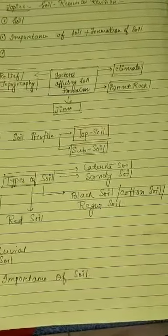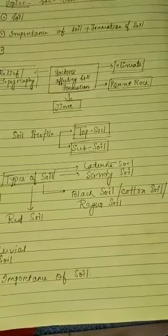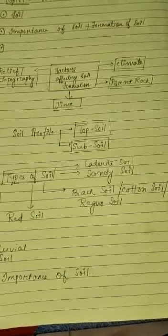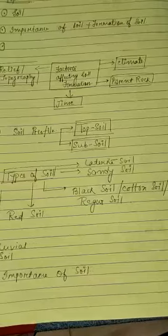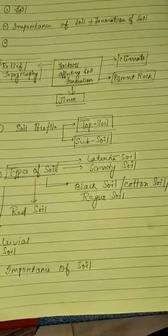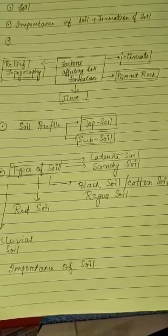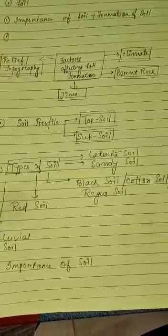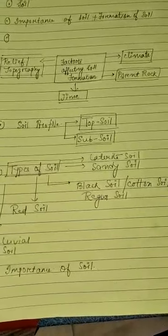Next is parent rock. What type of rock is present? Because soil consists of loose particles, and those loose particles come from rock. Erosion, deposition, and weathering of rocks help in the formation of soil. So parent rock also helps determine the factors affecting soil. Next is time. Time also plays an important role — how much time the soil has been forming and being processed matters significantly.